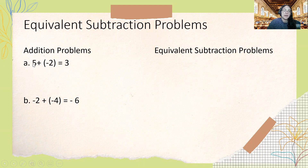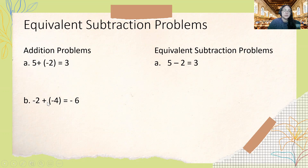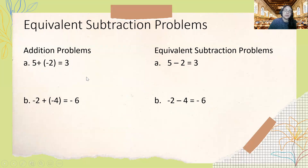For A, we have 5 plus negative 2 is equal to 3. In the last section we discussed how you can find this sum, but now we want to know what this would look like if we were to subtract them — it would look like 5 minus 2 equals 3. For B, negative 2 plus negative 4 equals negative 6, which as a subtraction problem looks like negative 2 minus 4 equals negative 6. Today we're going to learn how to convert subtraction problems back to the addition problems we've already worked with.